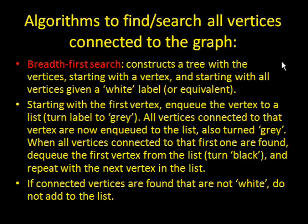Anyway, this algorithm, what it does, it constructs a tree with all the vertices, starting with a vertex that you choose to start with. And it also starts with giving all the vertices a white label, or a white color, or some other way to represent that. Starting with the first vertex, you enqueue it, that means you create a queue, added to a queue, and that if there's a vertex in the queue, you turn it to gray instead of white. Now, you check for all the vertices that are connected to that one vertex, and you enqueue them into the list, and also turn them gray. When you've found all the vertices connected to the first one that you found, then you dequeue the first vertex from the list, and you also turn it black. And then you repeat with the next vertex in the queue that you created.